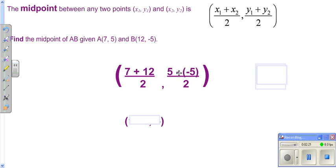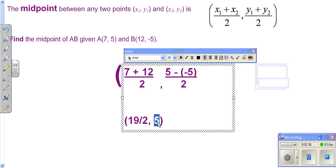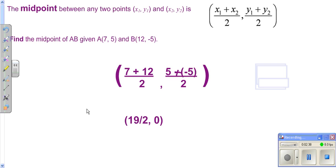We'll add these together, divide by 2, and we get this. That should be zero there, sorry about that. So we end up getting this for our answer.